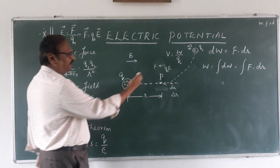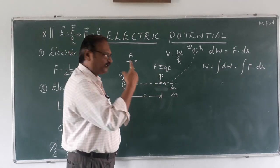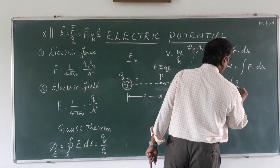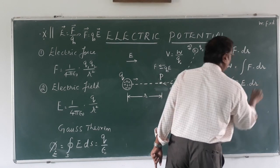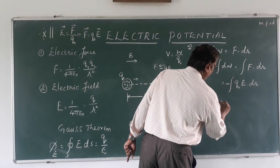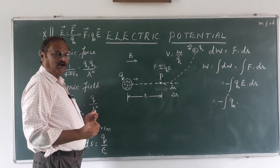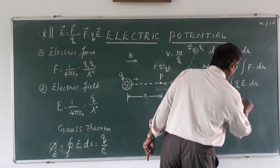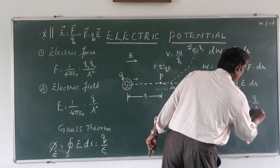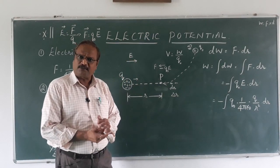Since electric field E equals F upon q naught, F equals q naught into E. But since we are moving against the electric field, the force applied is minus q naught into E. Substituting, the integral becomes minus q naught into E into dr. Now substituting E from Coulomb's law as 1 upon 4 pi epsilon naught, q upon r square, we get minus integral of q naught into 1 upon 4 pi epsilon naught, q upon r square, into dr.